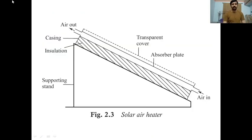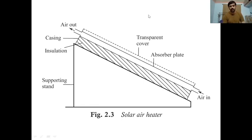In simple construction, this is the schematic cross-sectional view of a solar air heater. There is a supporting stand, insulation on the top, a transparent cover or glazing or glass cover, and an absorber plate below it. Instead of tubes carrying liquid as in a flat plate collector, here there is a passage for air — air enters and exits from the top by thermosiphoning. Everything is placed inside a casing.